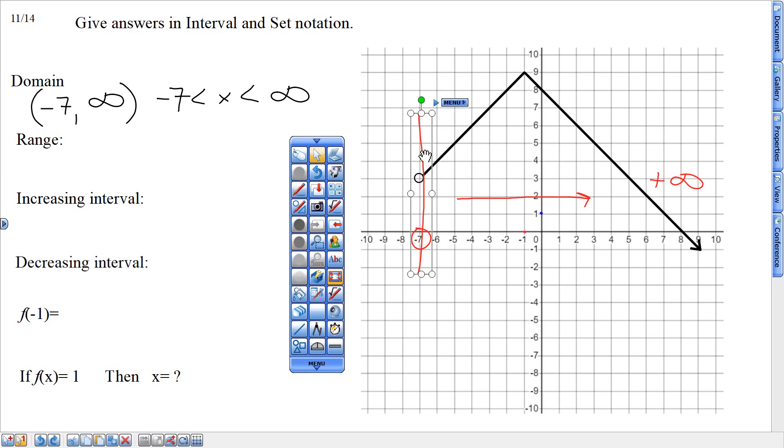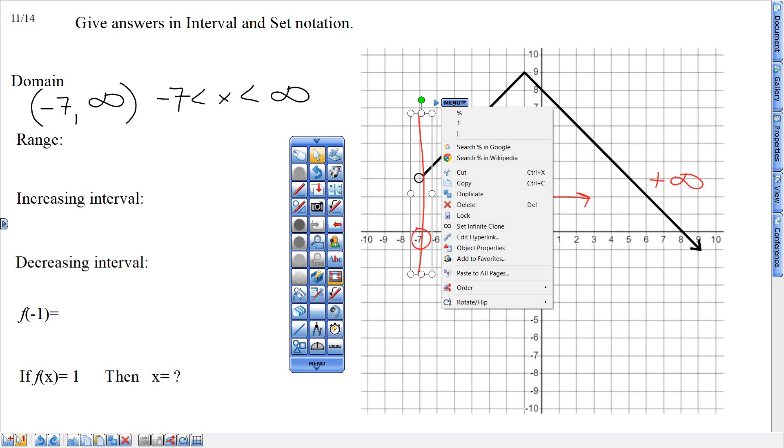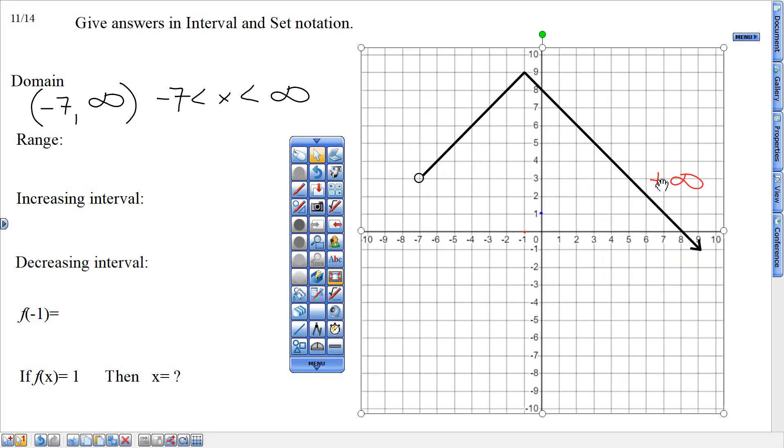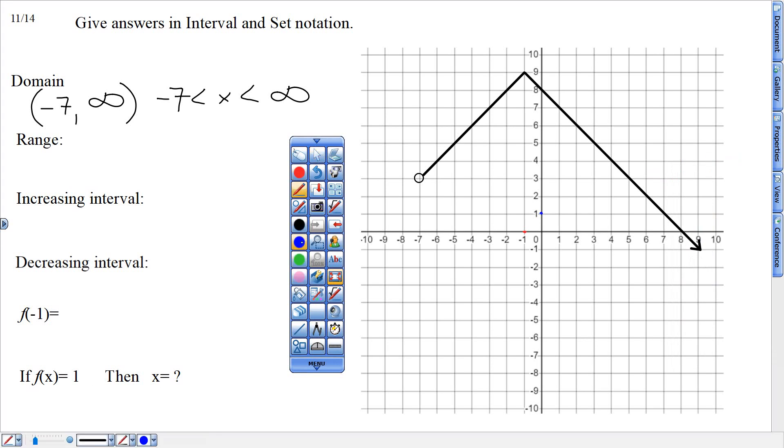Thanks for listening. Alright. So I'm going to delete this. When I do range, I'm going from bottom to top. And since this arrow is going down, there is no bottom to my range. So I write this as rounded, negative infinity. And then that goes all the way up here to that 9. And since that 9 is not open, I write that square.